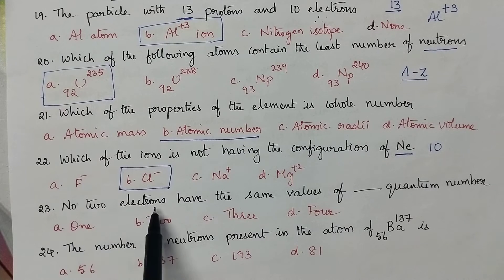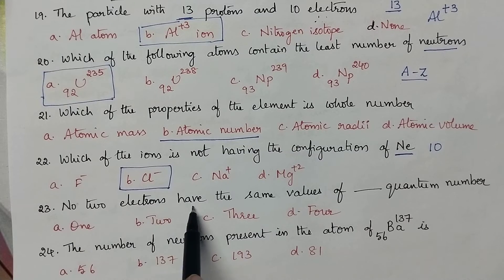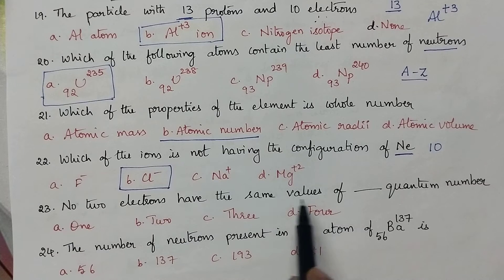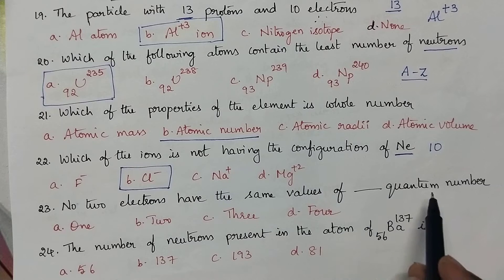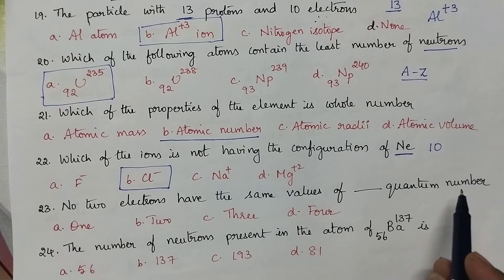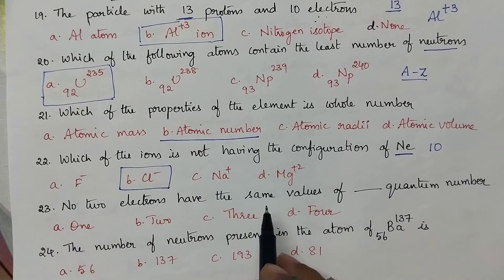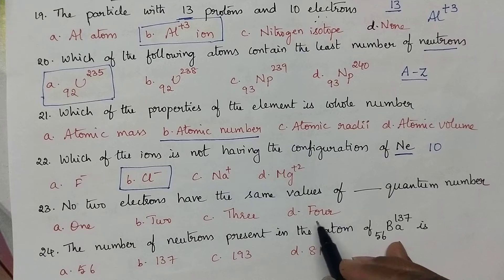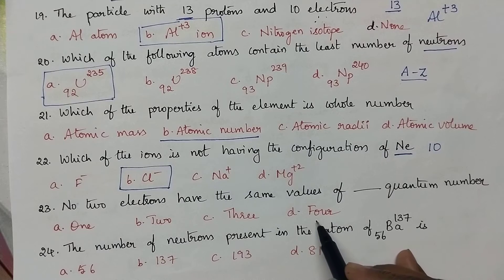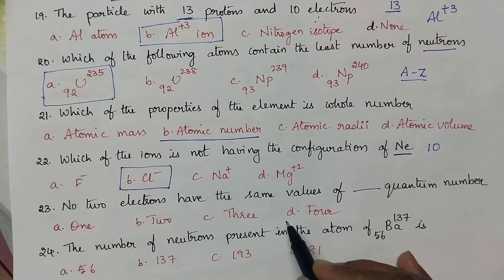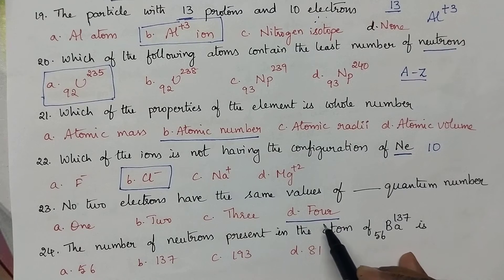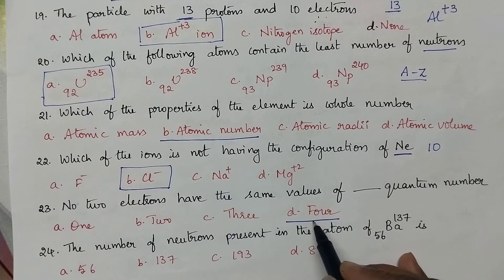No two electrons have the same value of all four quantum numbers. According to Pauli's exclusion principle, no two electrons have the same values for four quantum numbers. So option D is the right answer.